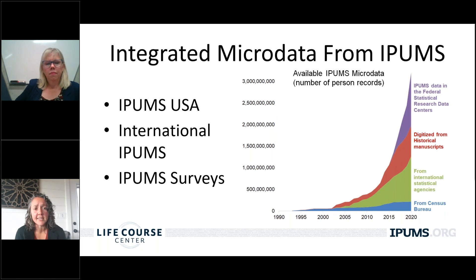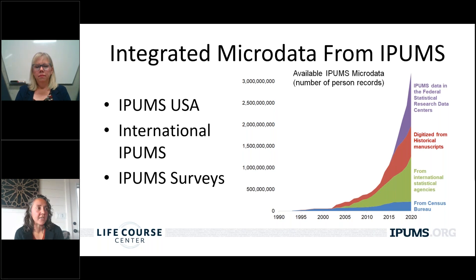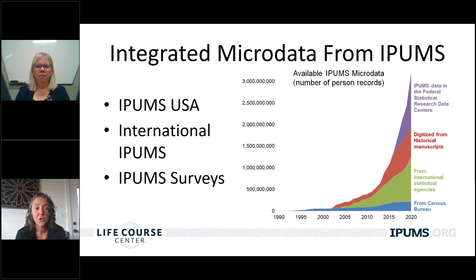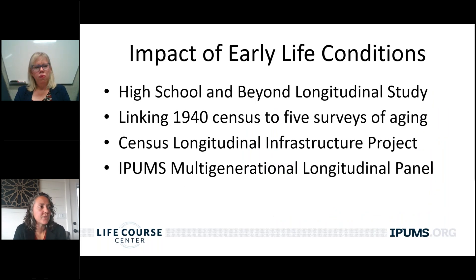IPUMS started disseminating census data back in the 90s, but over time our collection has grown dramatically, as you can see from the figure on the right. Our collection now includes U.S. Census data, international census data, and several U.S. and international survey data sets. Today, the collection includes nearly 3 billion person records, and since these are population level, there are lots of observations. The Life Course Center members are also developing longitudinal data to study early life conditions and the impacts on later life outcomes.